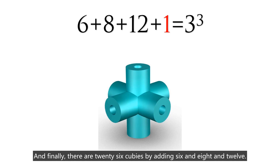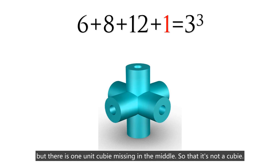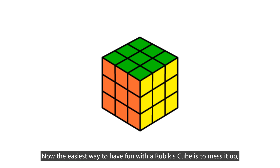And finally, there are 26 cubies in total by adding 6 and 8 and 12. But there is one unit cubie missing in the middle — that is not a cubie actually. There is a missing mechanism that supports the maneuvering of the cube and allows for a smooth rotation of each row.